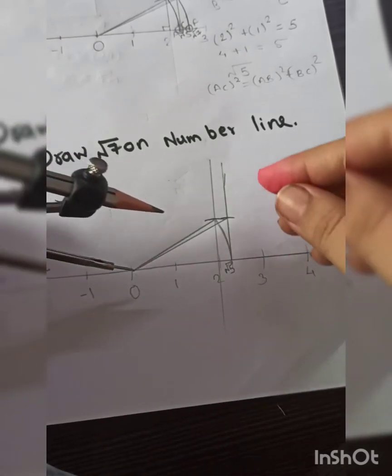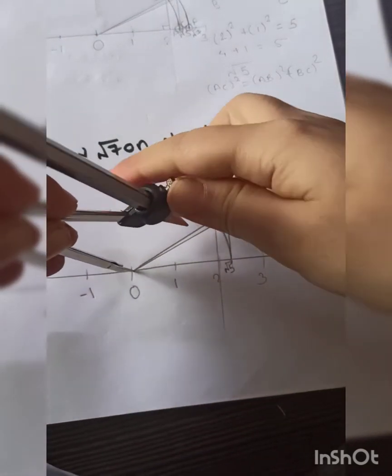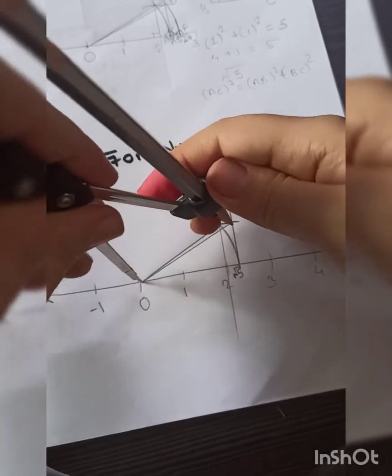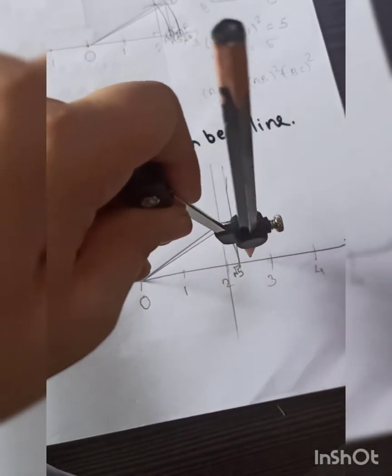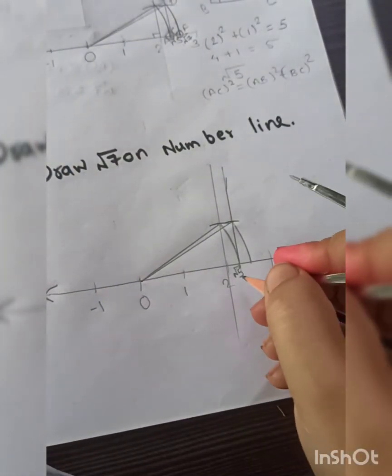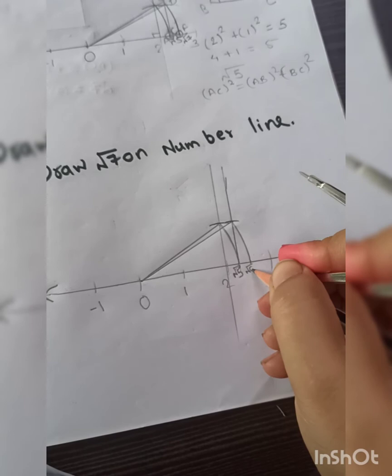Is it done? Yes, perfect. Now next, we will use the next radius which we have constructed just now. Take this distance and draw the arc. Yes, now this point on the number line is root 6. We got root 6, we got root 5. Now let's draw for root 7.